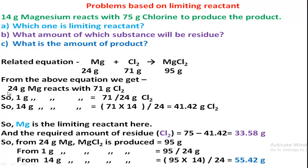From this equation, 24 grams of magnesium reacts with 71 grams of chlorine, so 14 grams of magnesium (given in the problem) reacts with 41.42 grams of chlorine. That means to react with 14 grams of magnesium, only 41.42 grams of chlorine is needed. But 75 grams of chlorine is given — excess chlorine is used. So the amount of magnesium is less, meaning magnesium is the limiting reactant.